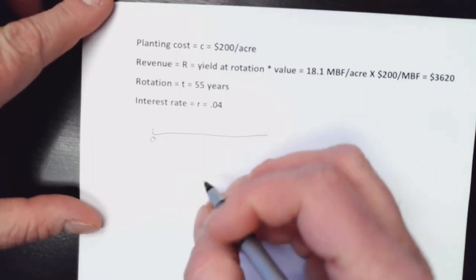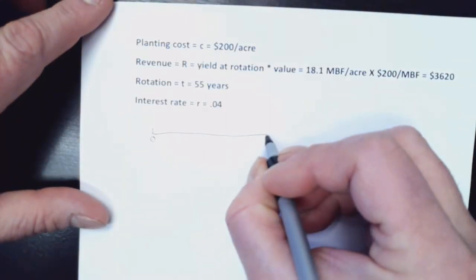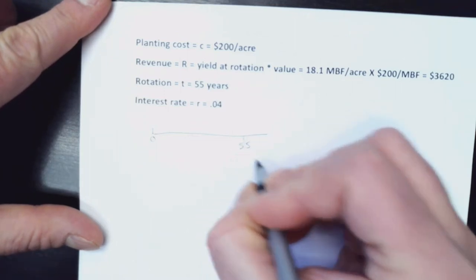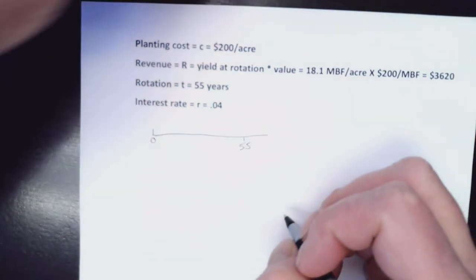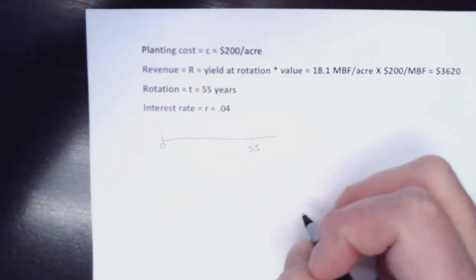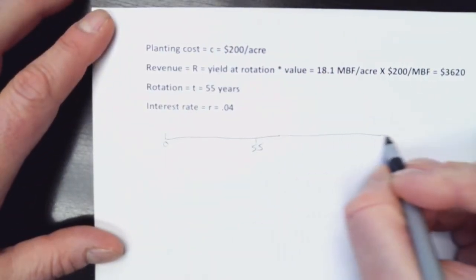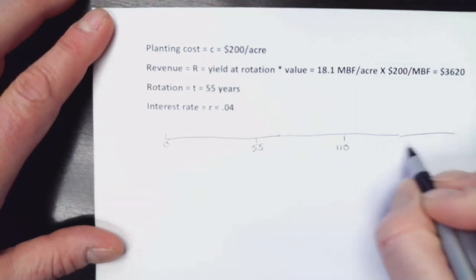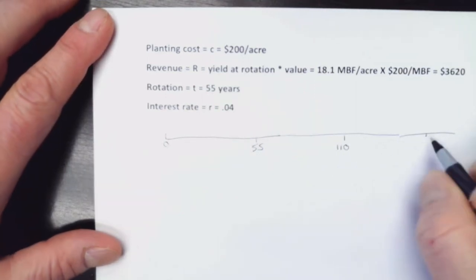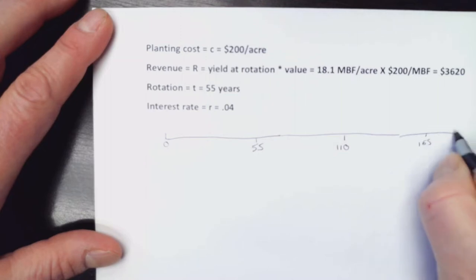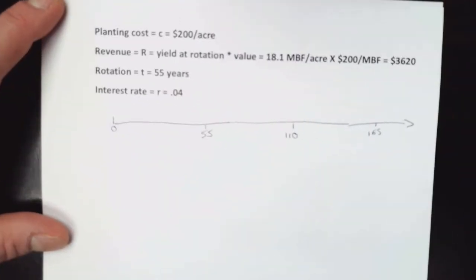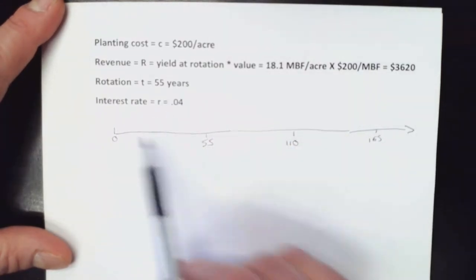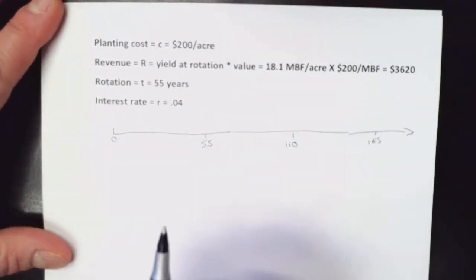And we're going, sorry about the video quality there, at 55 years, we are going to have a first harvest, and then if you think about it going out, the second rotation will be at 110 years. The third rotation would be at 165 years, and that goes on and on. So now let's put, that's our timeline with our rotations in it, every 55 years.